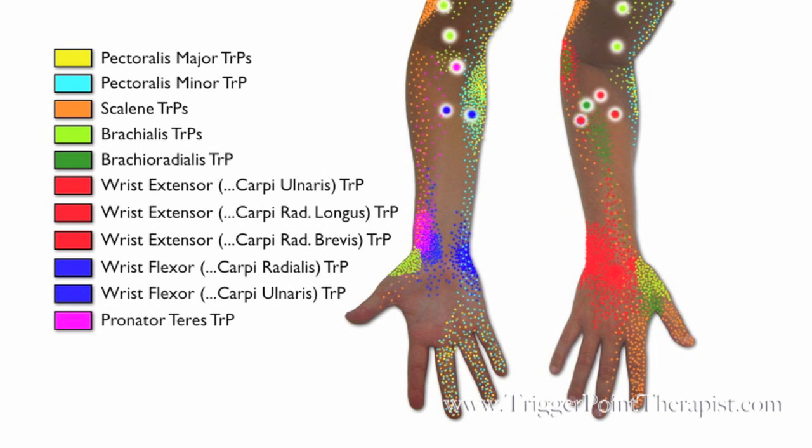And lastly in pink, we have the pronator teres trigger point, which refers pain to the anterior aspect of the wrist and the forearm on the thumb side.